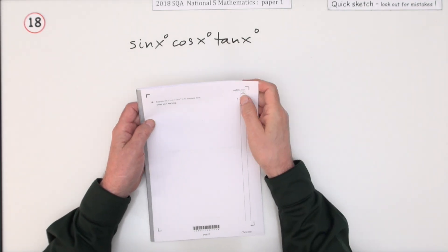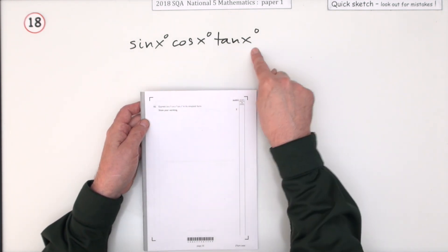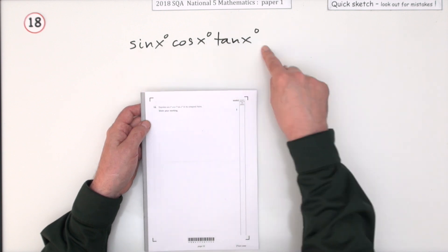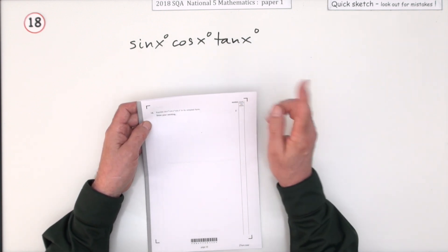Number 18 then from paper 1 of the 2018 National 5 Maths. This is the trig identity question. Worth two marks. Express this funny looking chain of trigonometrical things in its simplest form. Show your working.